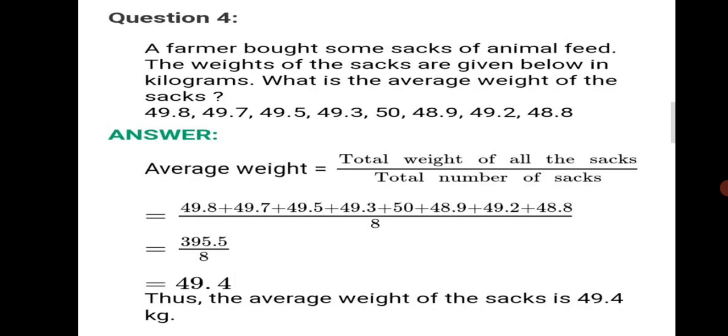Question number 4. A farmer bought some sacks of animal feed. The weights of the sacks are given below in kilograms. What is the average weight of sacks? The total weight of each sack is given. Count how many sacks are there, then add all the weights and divide by the number of sacks: 1, 2, 3, 4, 5, 6, 7, 8. The total number of sacks we have is 8. And this is the total weight of all the sacks.